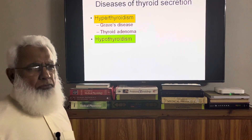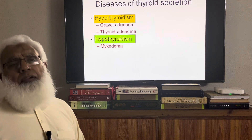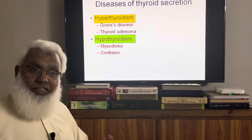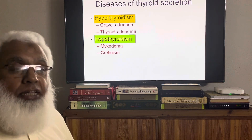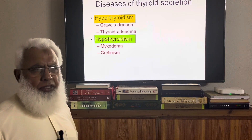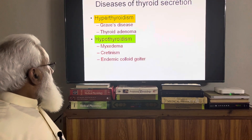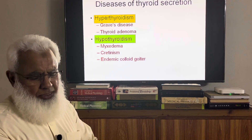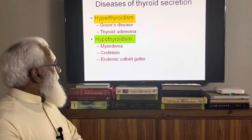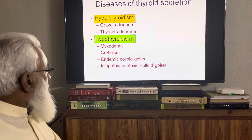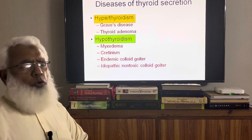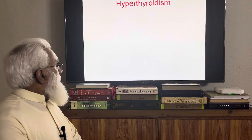Then hypothyroidism — there are several types. If hypothyroidism occurs in adults, it is known as myxedema; if it is in children, it is known as cretinism. There may be many types and causes of myxedema. Another type, occurring in both adults and children, is endemic colloid goiter, and another is idiopathic non-toxic colloid goiter.